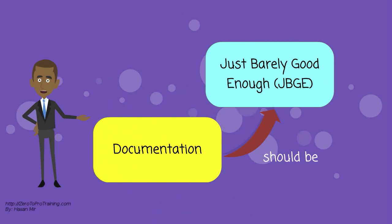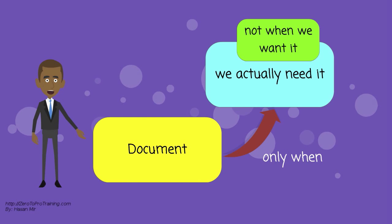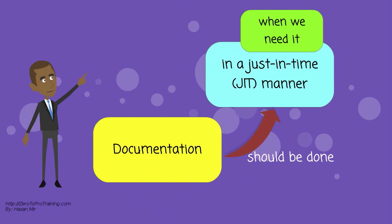Proponents of agile argue that the documentation should be just barely good enough. Document only when we actually need it, not when we want it. Documentation should be done in a just-in-time manner, when we need it.